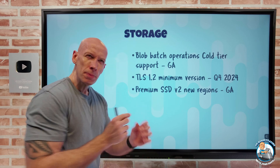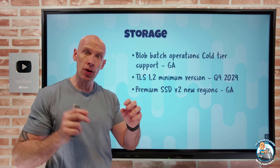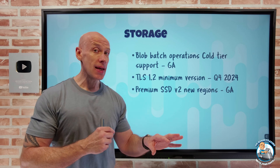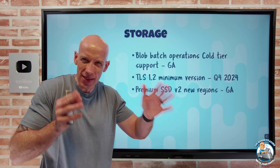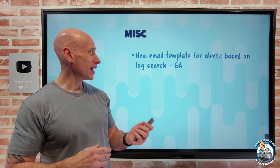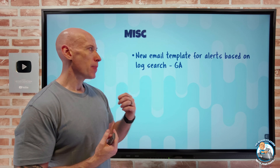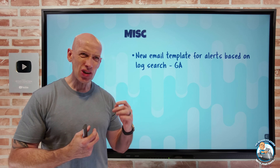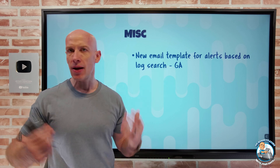The whole point of Premium SSD V2 is that it changes the model so that IOPS and throughput are now separate dials I can turn independently from capacity, and I can dynamically change those. It's a lot more like Ultra SSD — sub-millisecond latency — though Ultra SSD still has lower latency and higher IOPS and throughput capability. In the miscellaneous category, there's a new email template for alerts triggered through action groups based on a log search. If you're using the non-common schema, it's a more informative and visually appealing email template with more information.